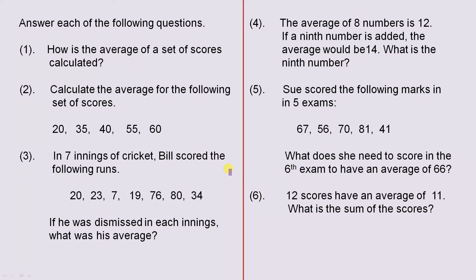Number three: in seven innings of cricket, Bill scored the following runs. There they are. He did very well here and here, didn't do so well there. But we need a number which summarizes all these scores, and that's called the average. If he was dismissed in each innings, what was his average?